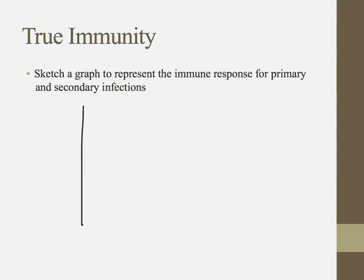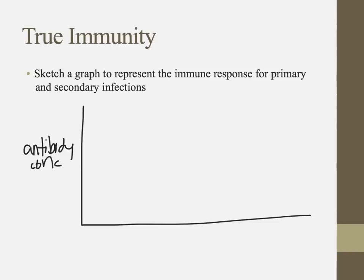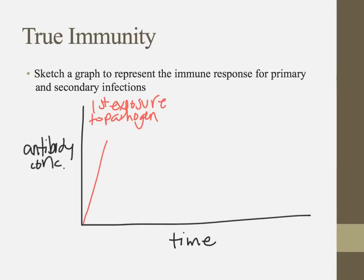Let's look at how antibody concentration changes over time in response to primary and secondary infections. During the first exposure — the primary exposure — antibodies slowly increase over time. Once the pathogen is fought off, we don't need as many antibodies, so they go back down. This is what we call the primary response.